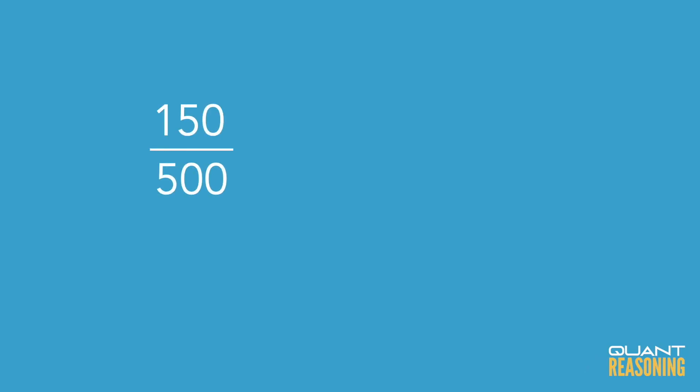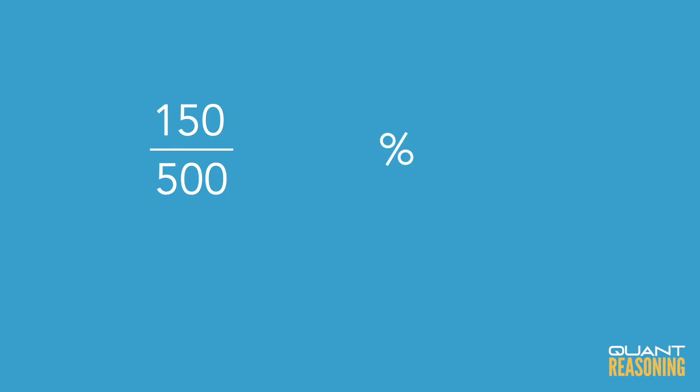Let's go back to the original question now. We're trying to figure out what percent is 150 out of 500. We'll start by pretending they asked what fraction is 150 out of 500, so that would literally be 150 divided by 500. Stick the percent symbol at the end because they want the answer in percents, and stick a factor of 100 in between. Now we can reduce the two zeros from the 500 with the two zeros from the 100, and we're left with 150 divided by 5, or 30 percent.